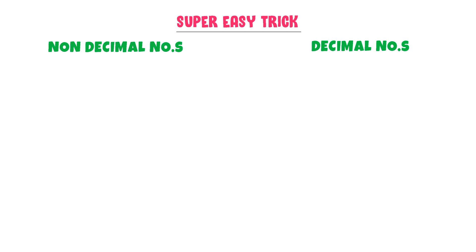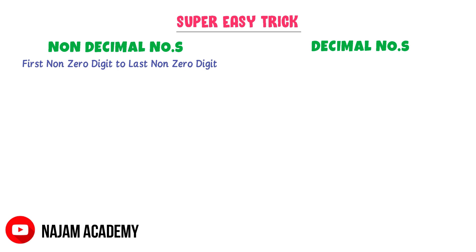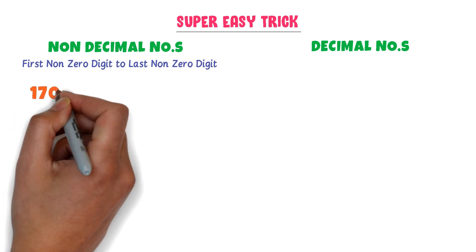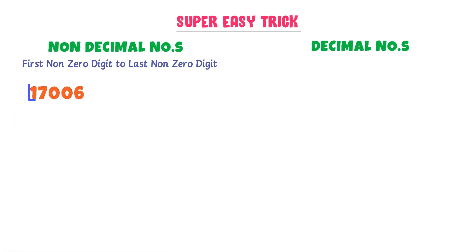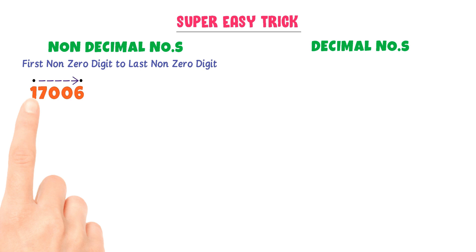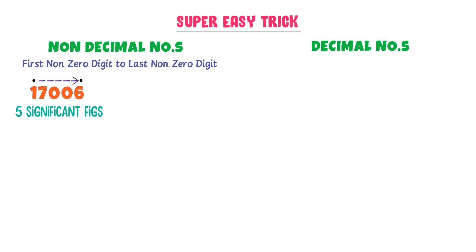In case of non-decimal numbers, the trick is: go from the first non-zero digit to the last non-zero digit. For example, consider a number where 1 is the first non-zero digit and 6 is the last non-zero digit. Go from 1 to 6 — counting 1, 2, 3, 4, 5 — so there are five significant figures present in this number.